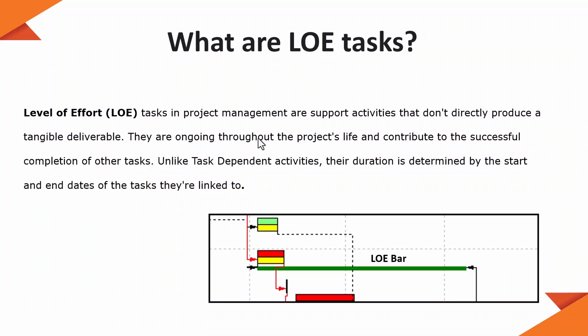Unlike task-dependent activities, the duration of level of effort tasks is determined by the start and end of the tasks they are linked to. The first activity driving the level of effort will be linked with a start-to-start relationship, and the last activity will be linked to the level of effort with a finish-to-finish relationship. So if the activity driving the start of the level of effort is delayed, the level of effort will reflect that as well.